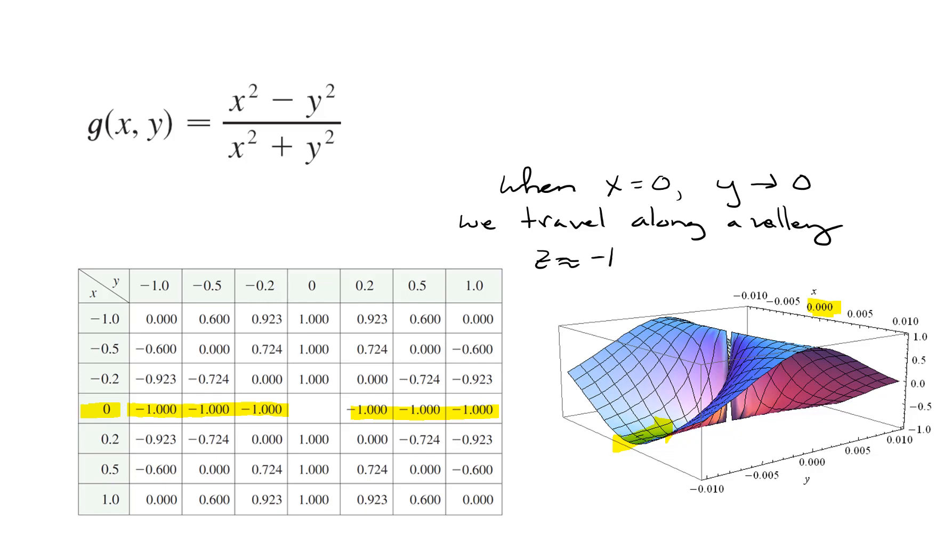Now what happens if we come in another direction? If we approach the origin, maybe letting y equals 0, and we trend in that way, it looks like the z coordinates are close to 1. On our picture, y equals 0. So if we're going to come in along that path, we're coming in along this ridge. And you can see the z coordinates up there are equal to 1. When y is fixed at 0, and then we let x trend towards 0, we travel a ridge, and our z values look like they're close to 1.